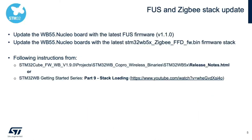Once you have all the software tools and hardware ready, you'll need to start by updating your WB Nucleo board with the latest FUS and Zigbee stack. For instructions on how to do this, you can follow the instructions in the release notes found in the STM32 CubeWB package, or you can follow the stack loading video number nine of the WB Getting Started series, which you can find on YouTube.